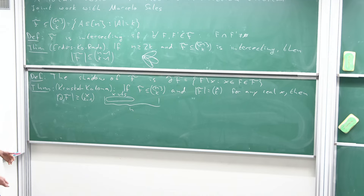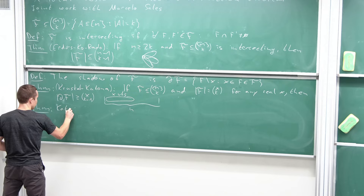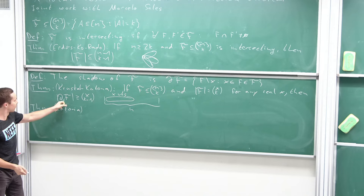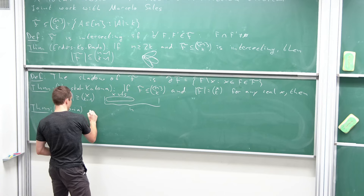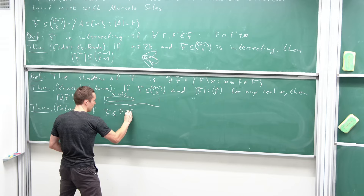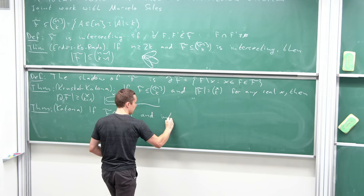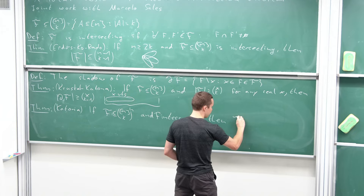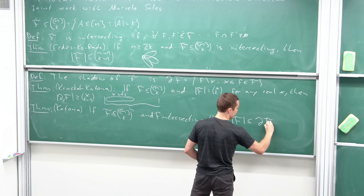There is also Katona's intersection theorem, which combines these two definitions. It says that if we have a k-uniform intersecting family, then the size of the shadow is at least as large as the size of the family.